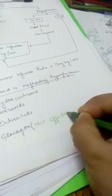First is hydrocortisone. Second is diazoxide. Third is octreotide. Fourth is glucagon. A point to remember: glucagon is not effective in IUGR. This is the point you have to remember.